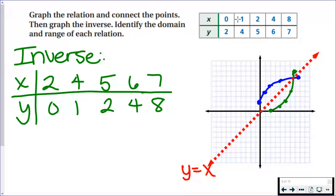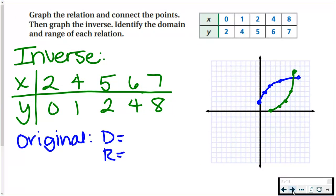You can see that in the table as well. It goes from 0 to 8, so the domain of the original is all x values from 0 to 8.